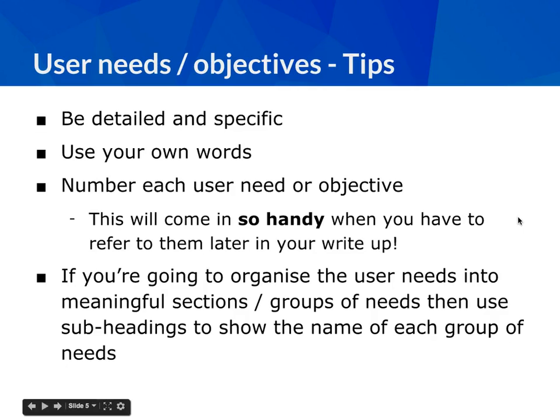For example, if we were making a snakes and ladders game, user needs might be listed as: one — each user takes it in turn to move; two — the user whose go it is can roll a die; three — the die can produce a result between one and six; four — the player moves as many spaces as the value of the die; five — if the player lands at the bottom of a ladder, they move up to the top. Each of those is its own numbered point — don't wrap them all into one sentence.